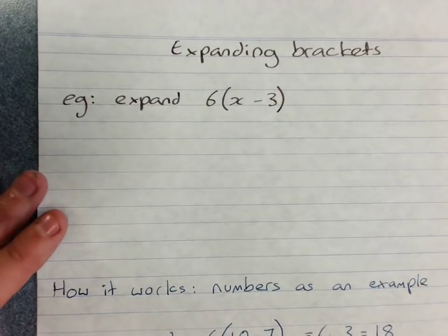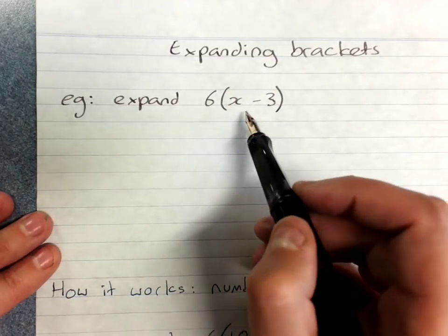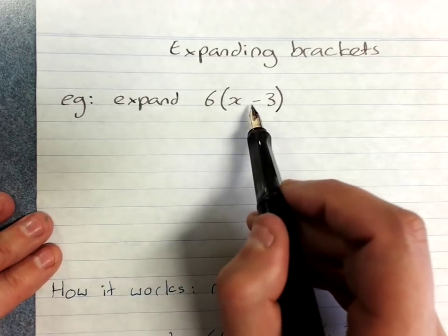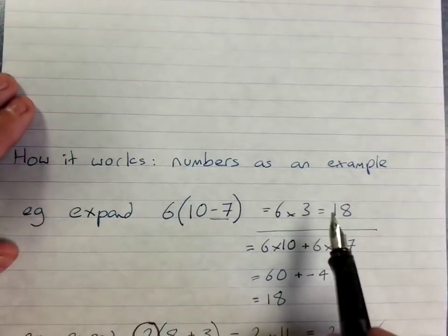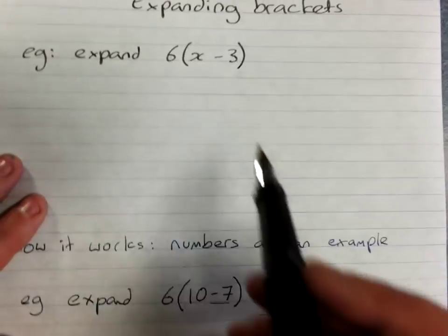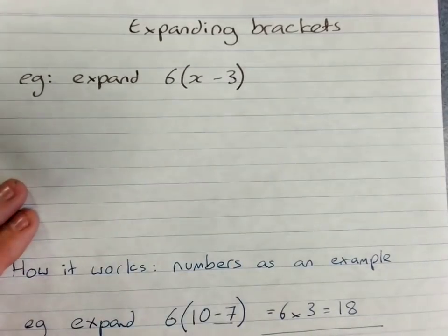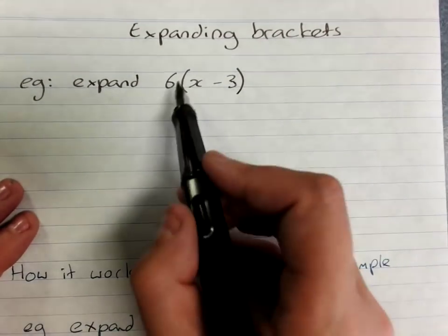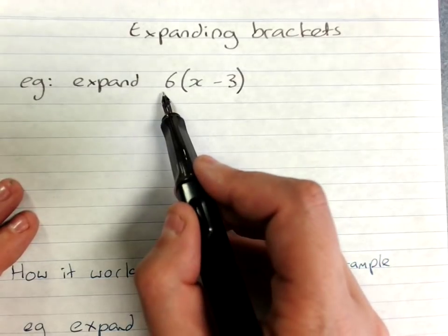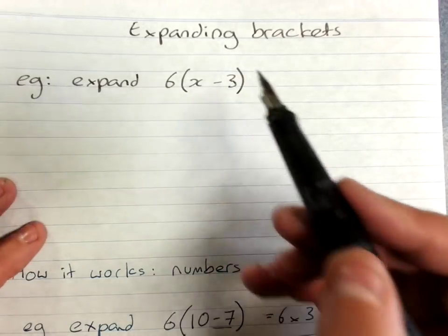So when they say expand 6 outside of x minus 3, I can't do anything with this sum because these are not like terms. I can't solve that the first way by just doing the sum in the brackets, but I can simplify it by multiplying the thing out the front by the first term and the thing out the front by the second term.